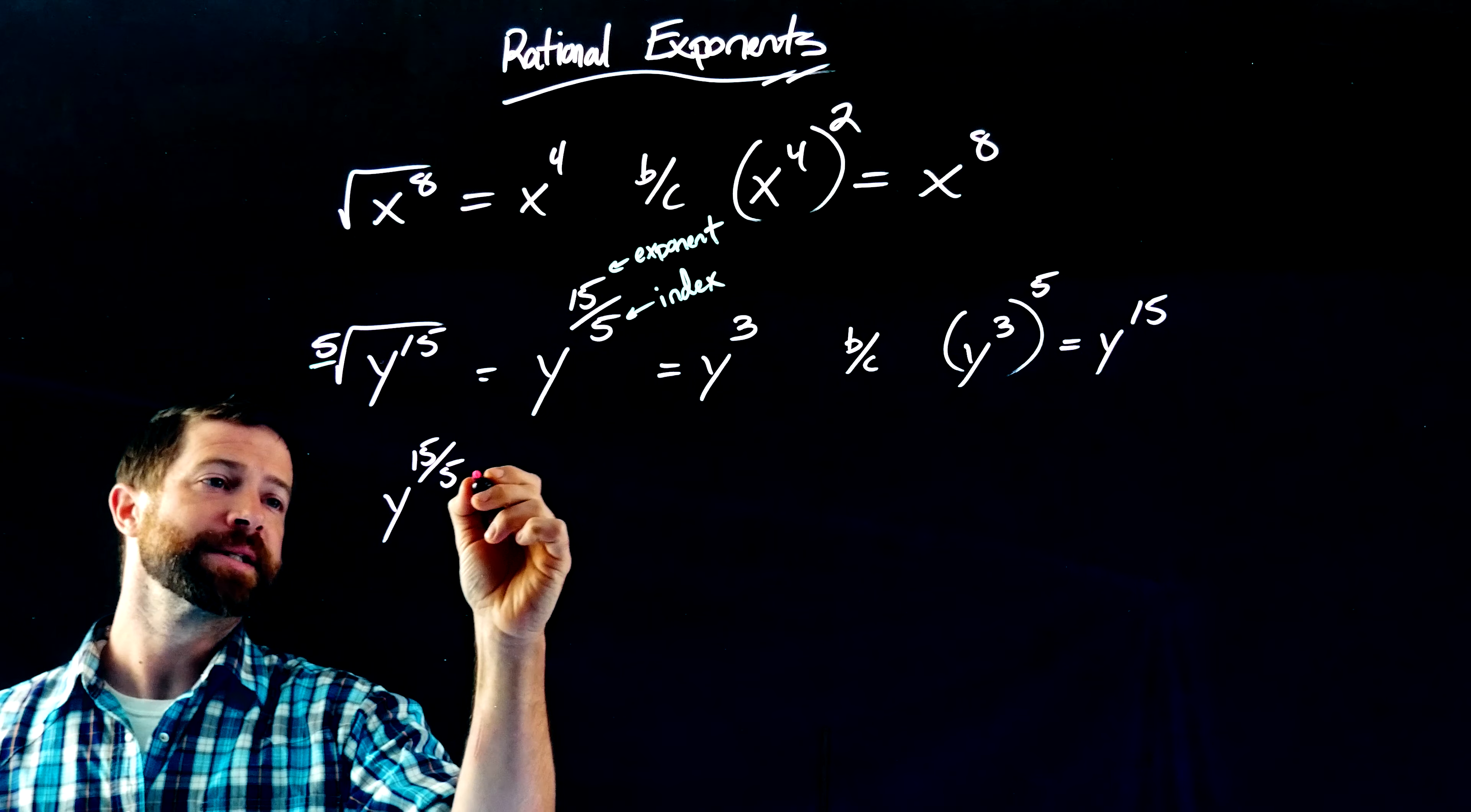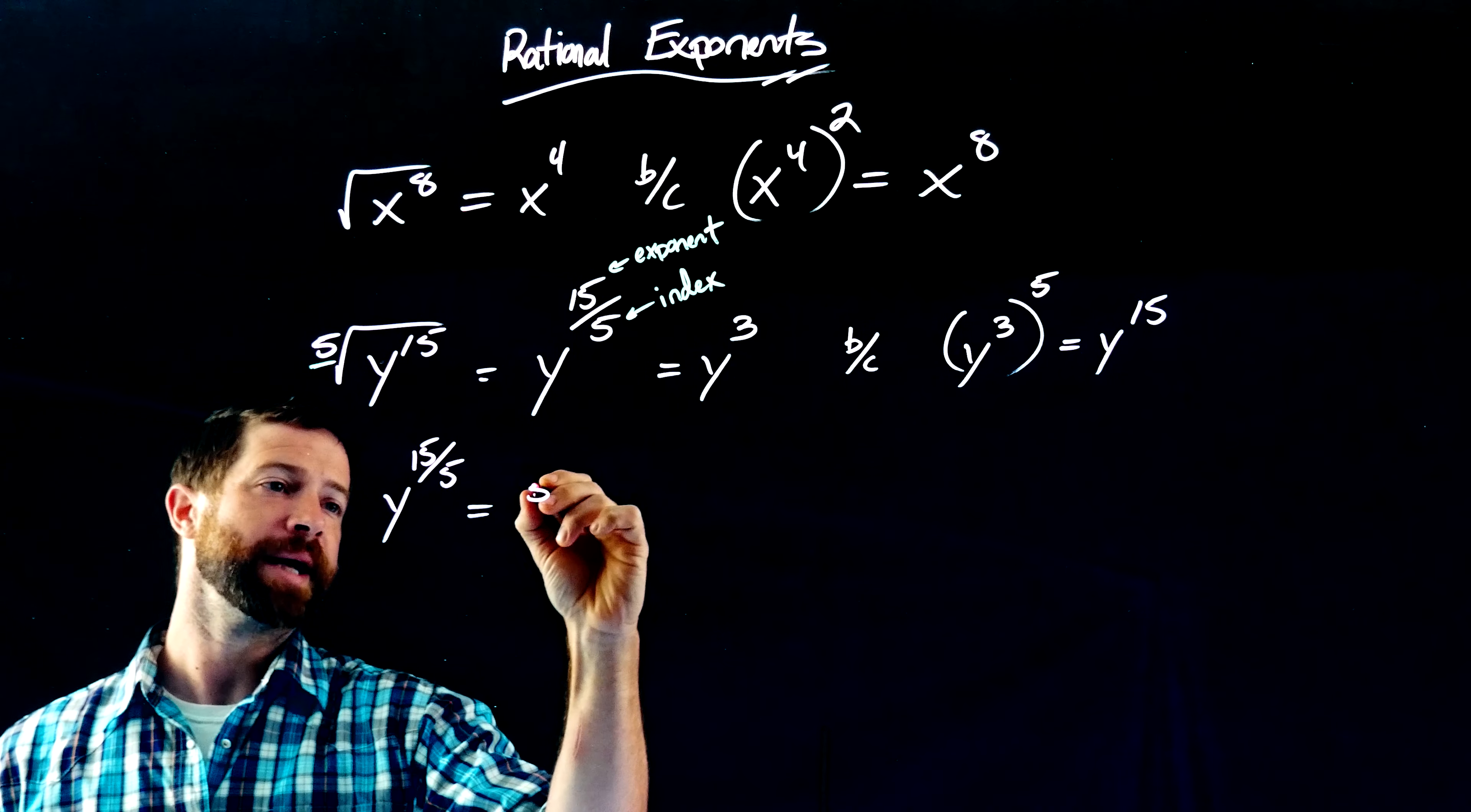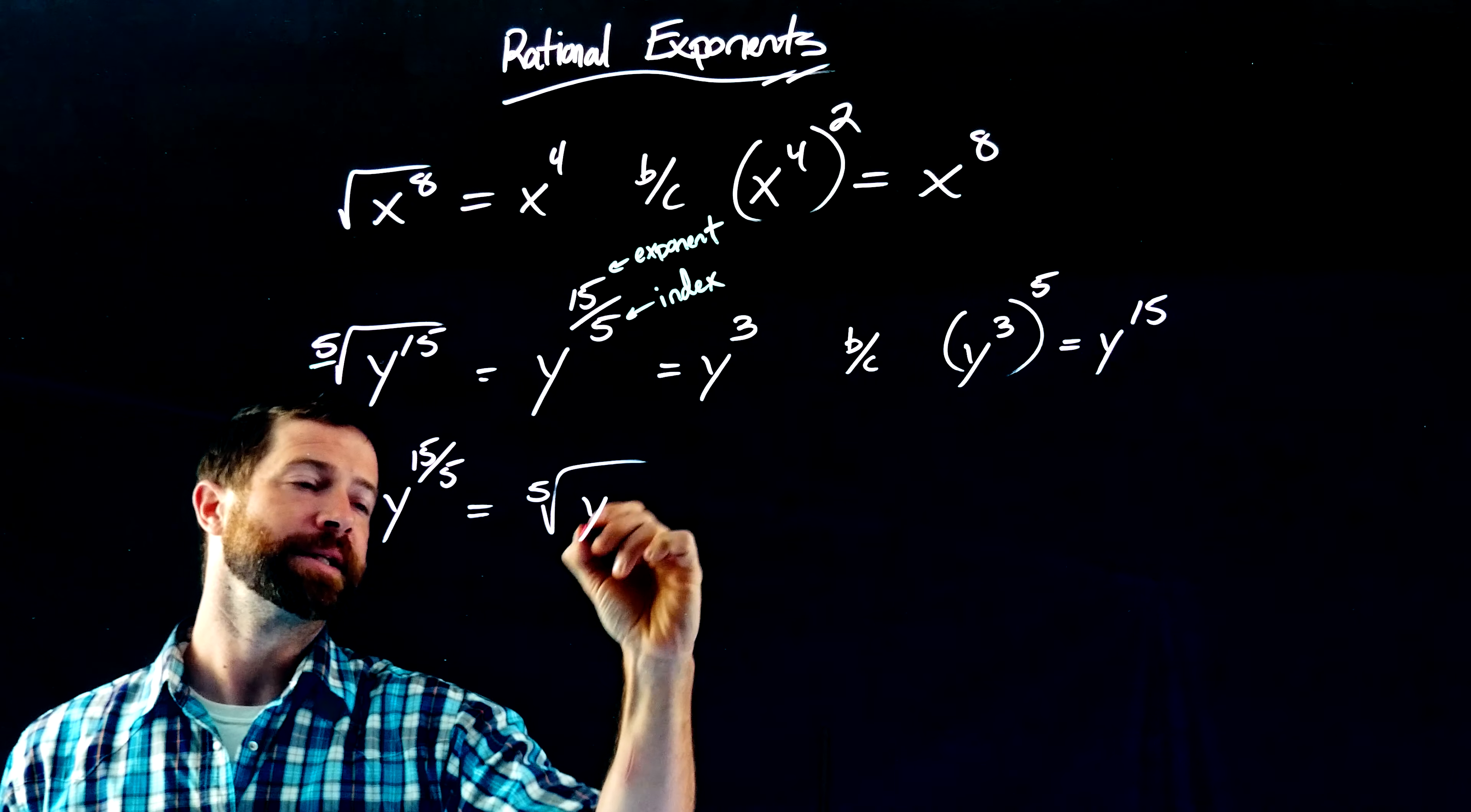If somebody gave me something like y to the 15 fifths, I would know that this is the index and that's the exponent, and so I could rewrite it as the fifth root of y to the 15.